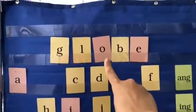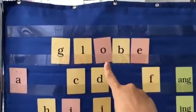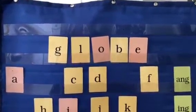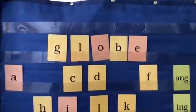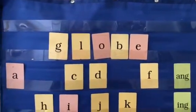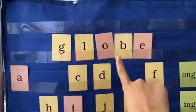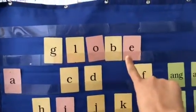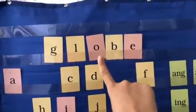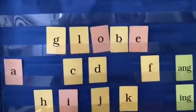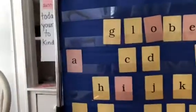Why did I say O instead of A? Tell it to me now. Because it is a vowel consonant E word. So that means that O says its name, not its sound. So I have the word globe right here.